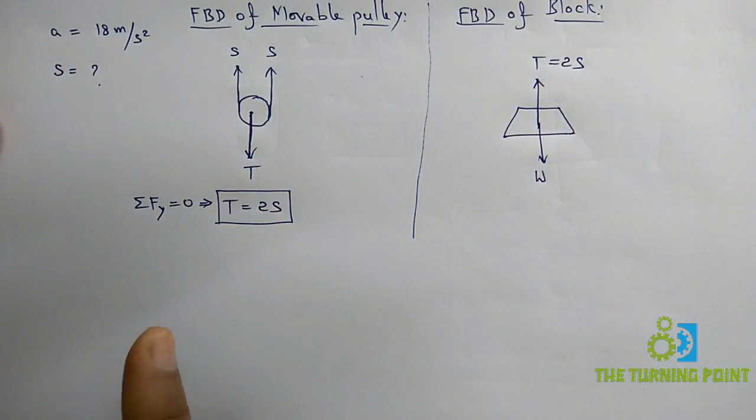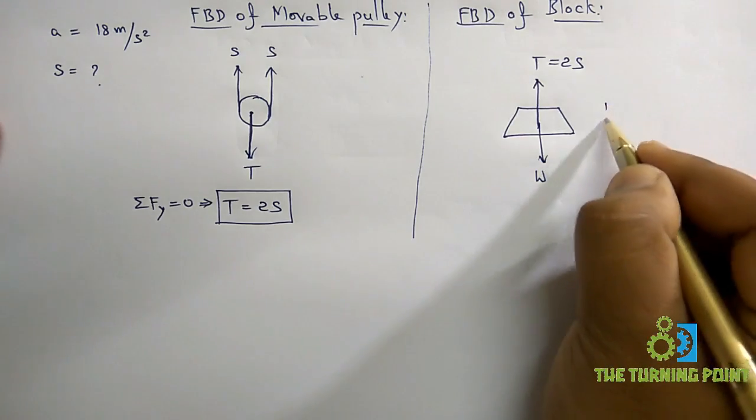In the given problem it is mentioned that at the free end A of the string it is pulled vertically downwards. That means the block is going to move in the upward direction.